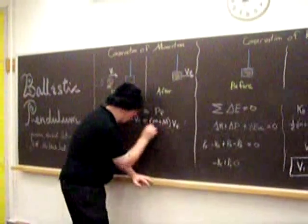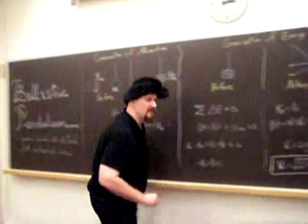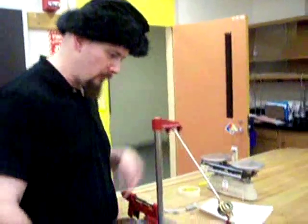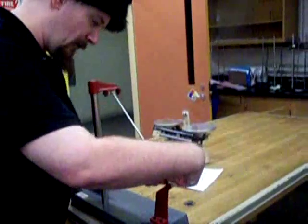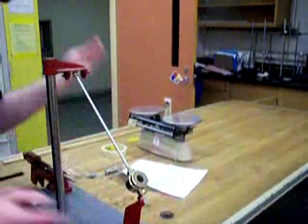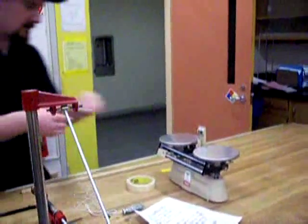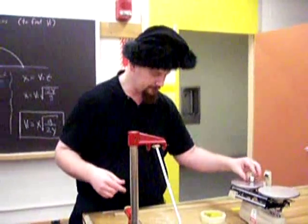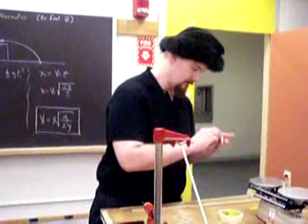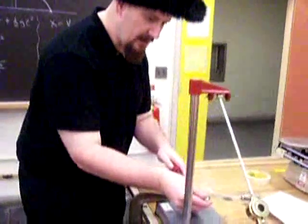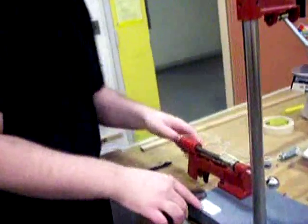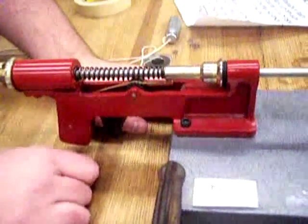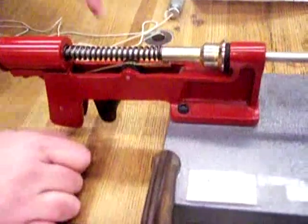Let's grab the masses first. To find lowercase m, we need the mass of the ball. So, with my thumb, I'll pop the ball out of the pendulum. And then I'll find that mass with our friend, the triple beam balance. And then the mass of the pendulum capital M is written on the corner of the pendulum itself. In this case, it's 272.42 grams.